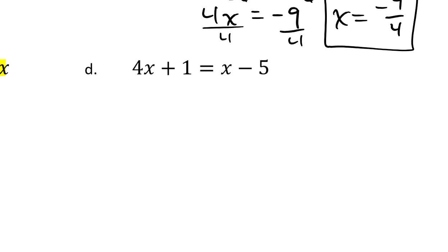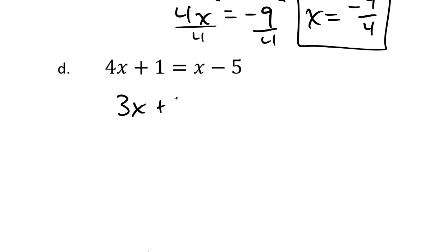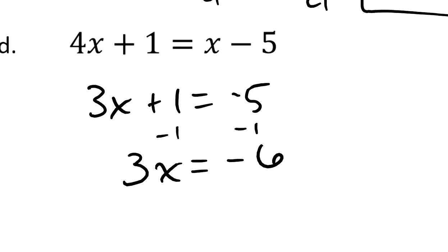I'm going to take away an x from each side. That gives us 3x plus 1 is equal to negative 5. I'll subtract 1 from each side. That gives me that 3x is equal to negative 6. x, taking away 1 from both sides. By the way, I don't like how I wrote this negative 5. That's the kind of thing that you could lose track of. So try and make it very clear so you're not losing things like negative symbols.